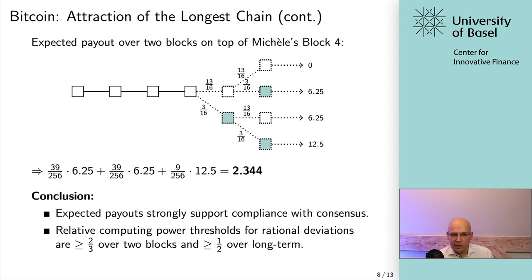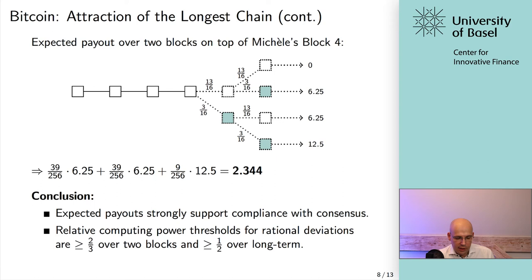The relative computational power threshold for rational deviations is two-thirds for a two-block scenario. When you extend to an infinite time period, the threshold converges towards one-half — this is the famous 51% attack. Whenever you have more than half of the computational resources at your disposal, in the long run you can always attack the network. The security of the network also relies on the fact that computational resources are distributed among a relatively large number of miners, and not concentrated with just one of them.